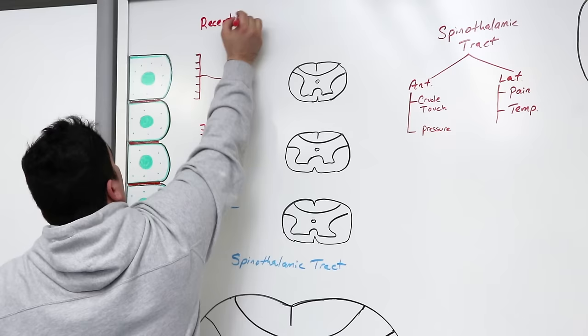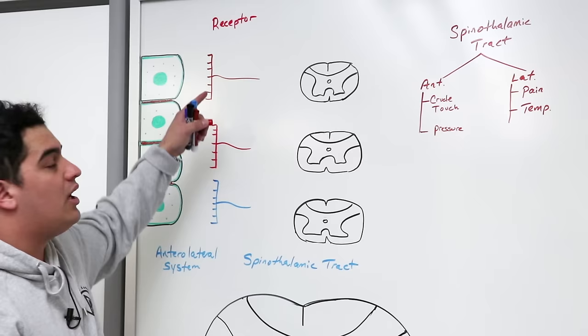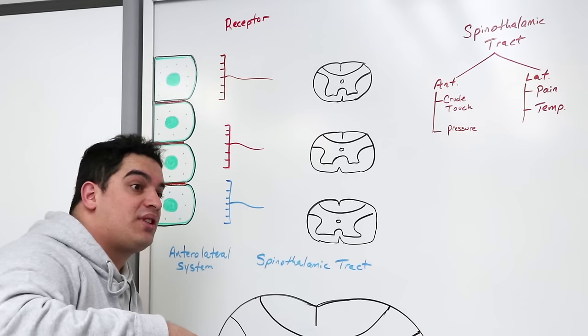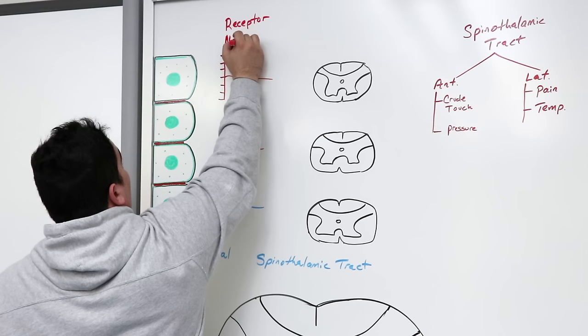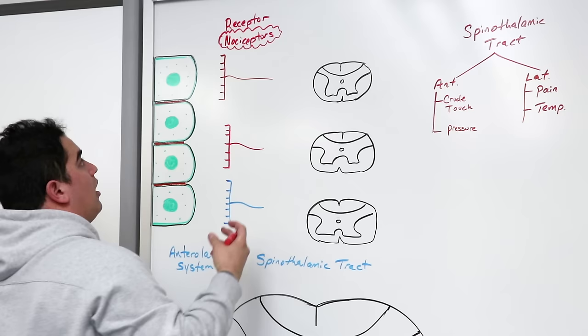In order to sense pain or extreme temperatures, we need some type of receptor to pick up that stimulus. The kind of receptor that picks up pain and temperature is called nociceptors. There are many types — mechanoreceptors, thermoreceptors, and so on — but here we're focusing on nociceptors.